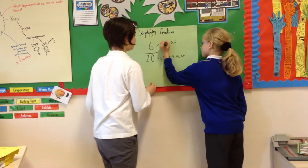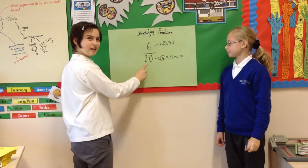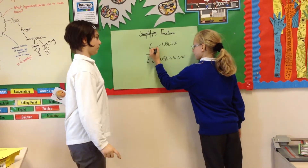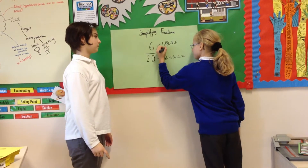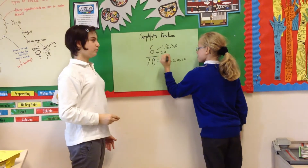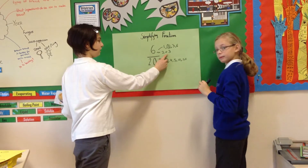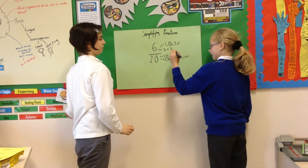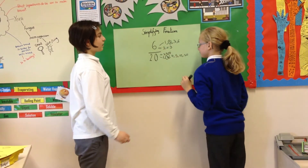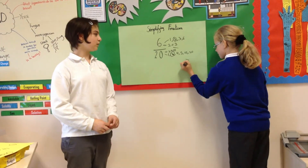So now you need to circle both the twos. Next, divide both the numerator and the denominator by two. Six divided by two equals three, so three is your numerator. Then you draw the line. Twenty divided by two is ten. Three tenths is your simplified fraction.